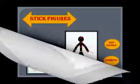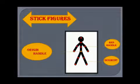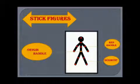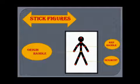Our next topic is stick figures. When you start Pivot Animator, you will be able to see a stick figure on the Pivot Animator window. This stick figure is made of lines and dots. Using these dots, you can adjust the posture and position of the figure.